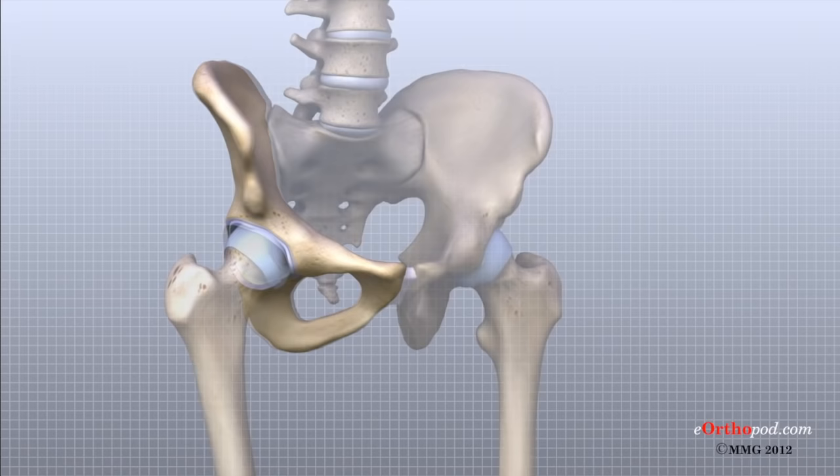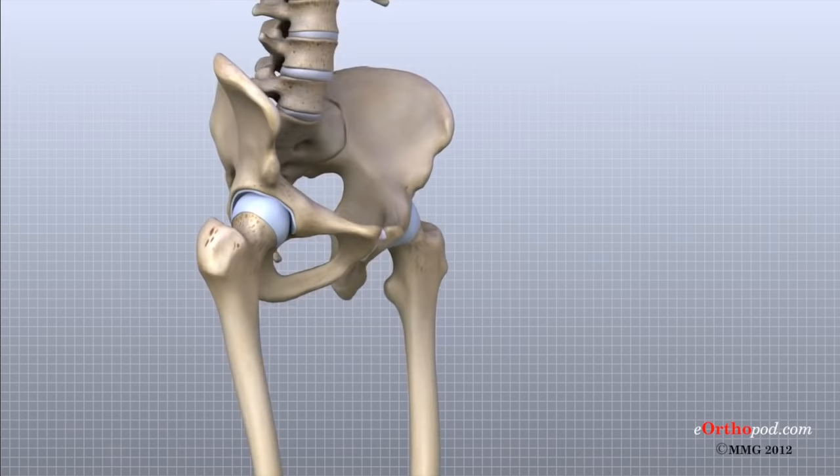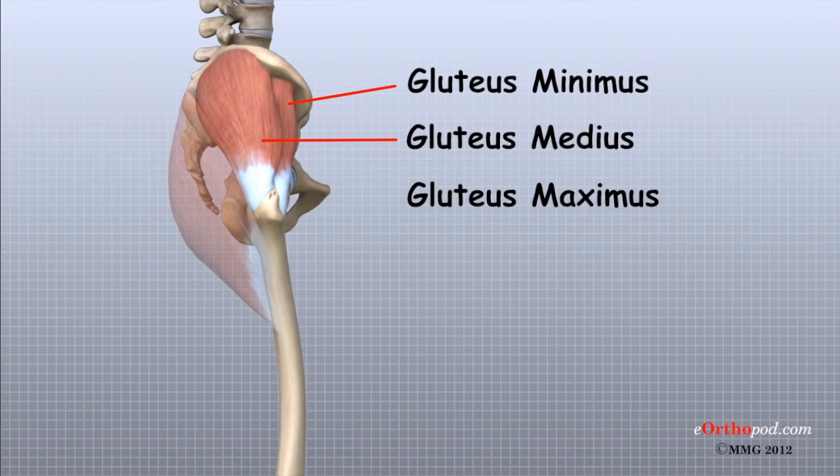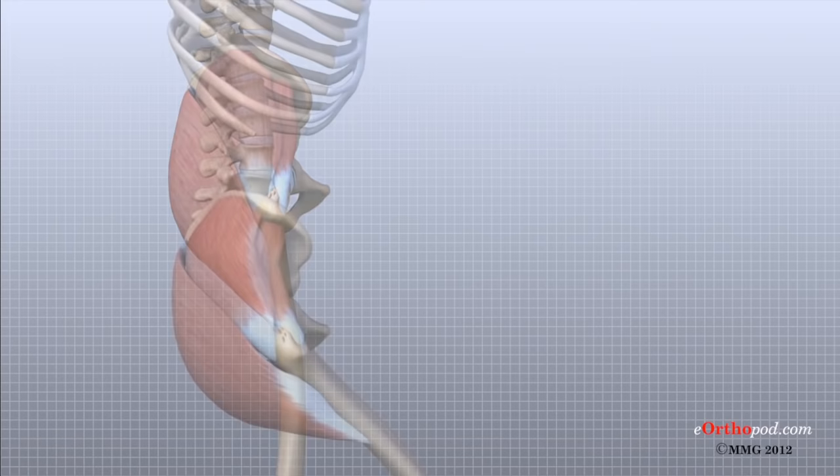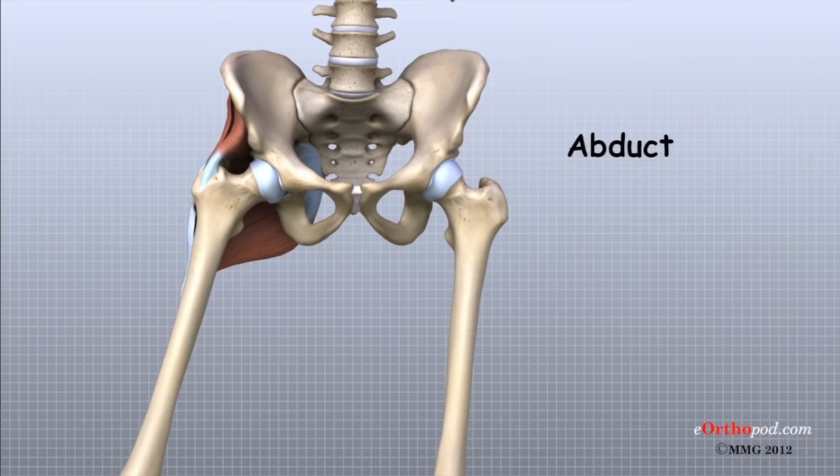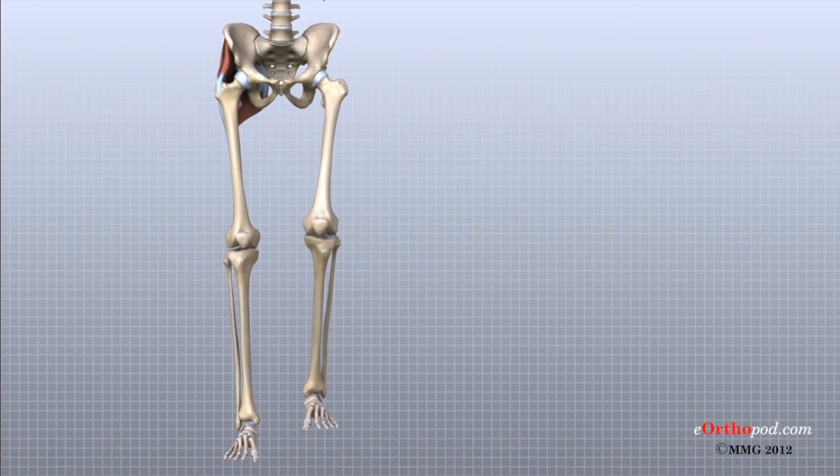The hip is surrounded by large, thick muscles. Three gluteal muscles—the gluteus minimus, gluteus medius, and gluteus maximus—make up the muscles of the buttock on the back of the hip. These muscles extend or pull the thigh backwards and abduct or pull the thigh away from the other leg. These muscles are also important for keeping the pelvis level as we shift weight from one leg to the other during walking.